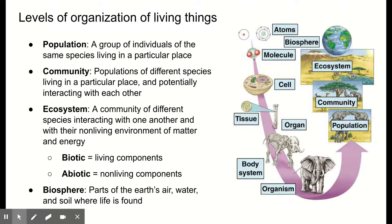A quick reminder: we have terms to refer to the living or non-living components of an ecosystem. The living components are called biotic components, and the non-living components are abiotic components. Finally, the biosphere is all of our ecosystems put together — all of the parts of earth's air, water, and soil where life is found. These are our different levels of organization of living things.